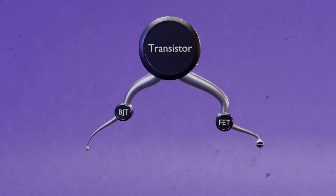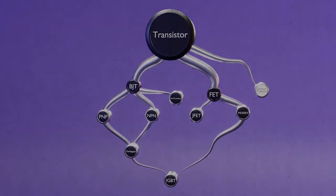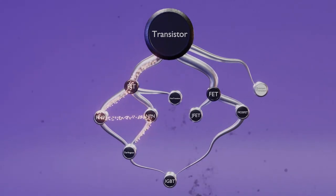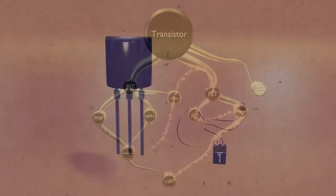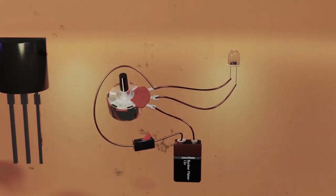In the previous episodes we saw how the most common transistors work, and how they manage to perform two essential functions, acting as switches of signals and acting as signal amplifiers.